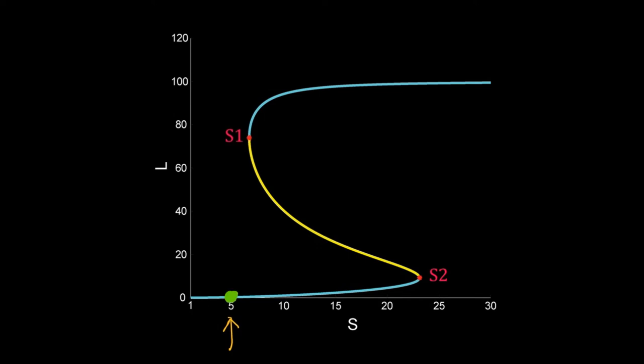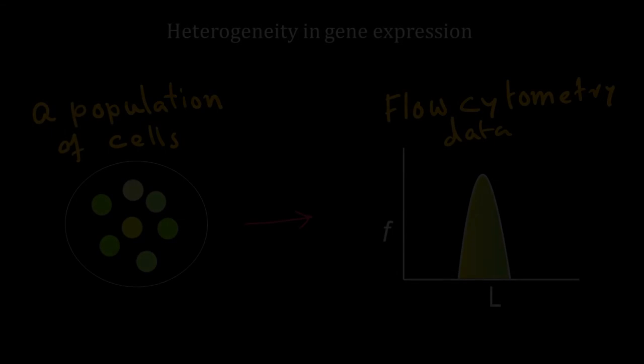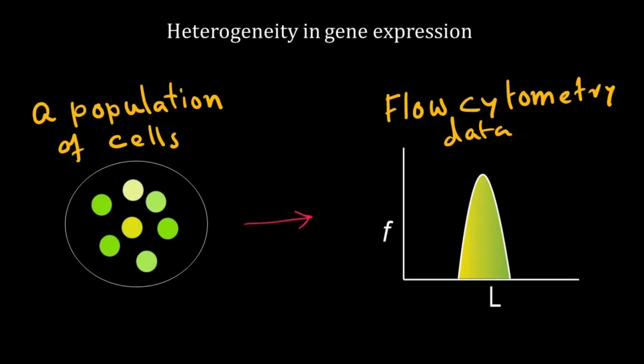So if we analyze those cells by flow cytometry we will get a very low fluorescence. But will all the cells have the same fluorescence? In other words, will all the cells in the flask have the same amount of L? Not really. Our model is deterministic but let me remind you that gene expression in an individual cell is a stochastic process.